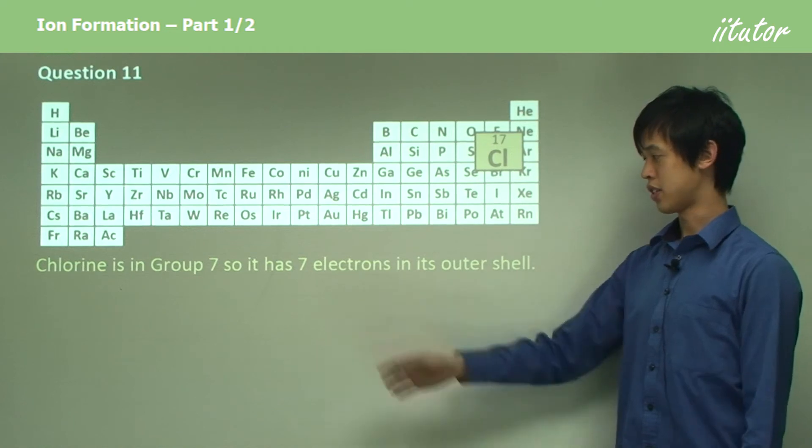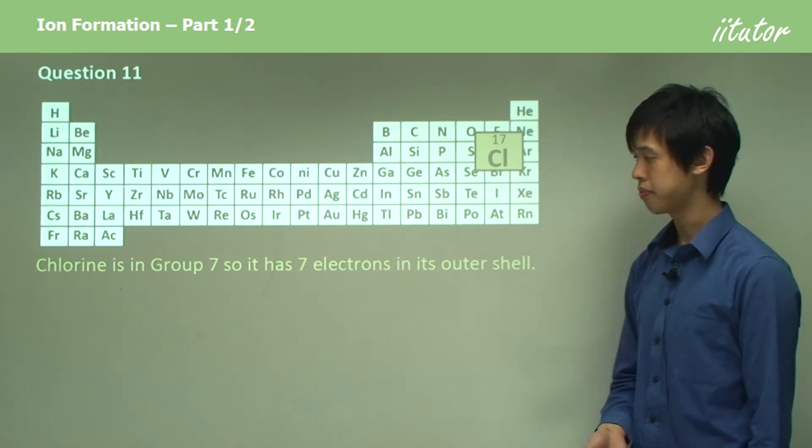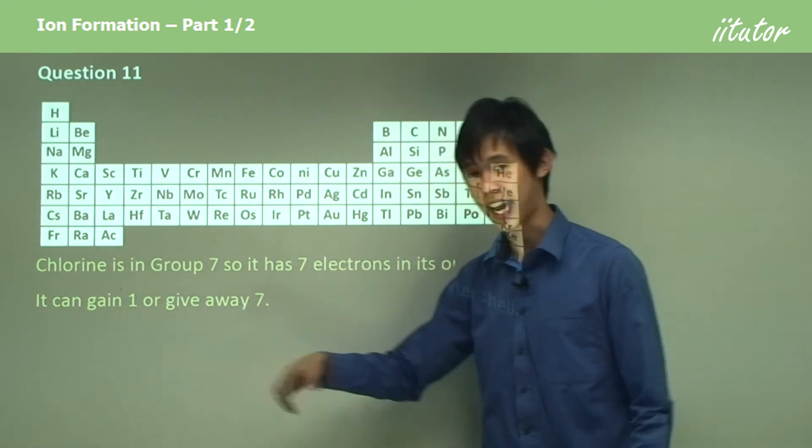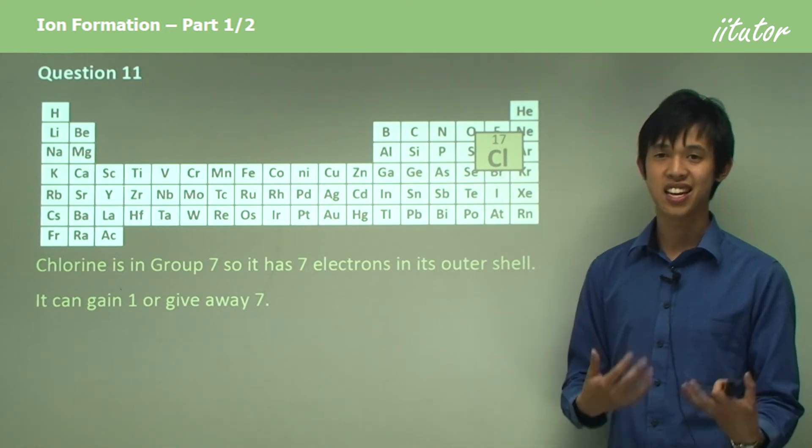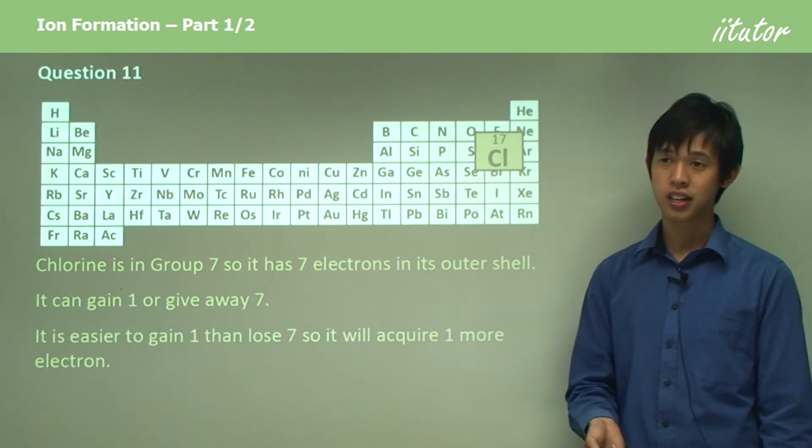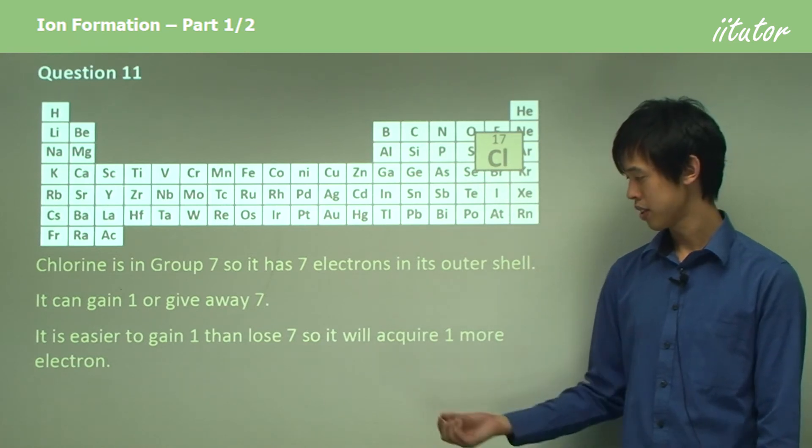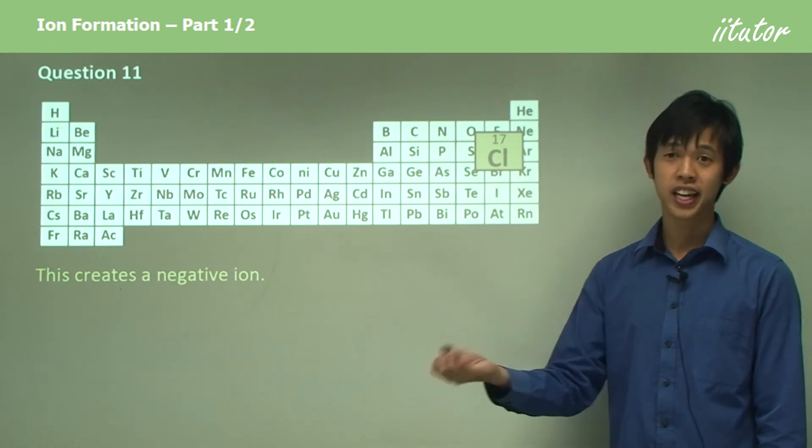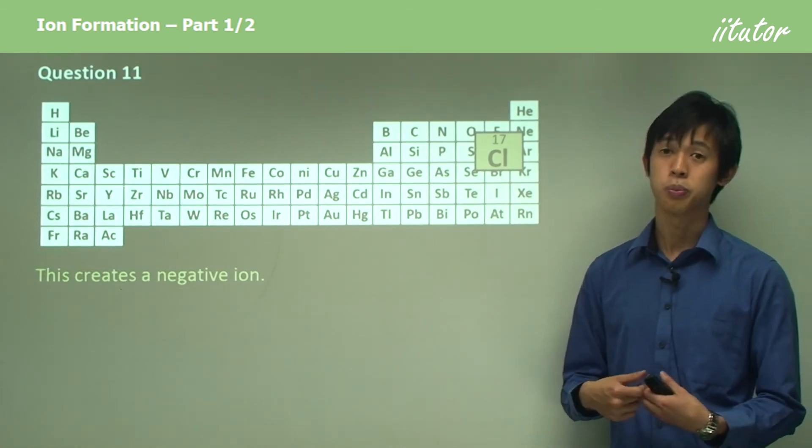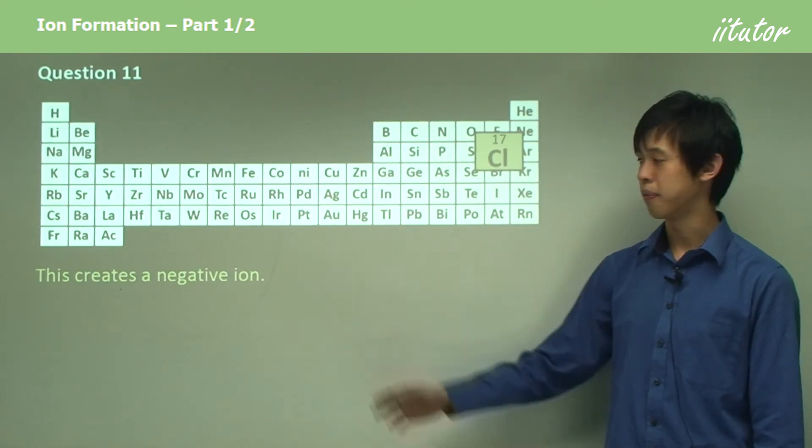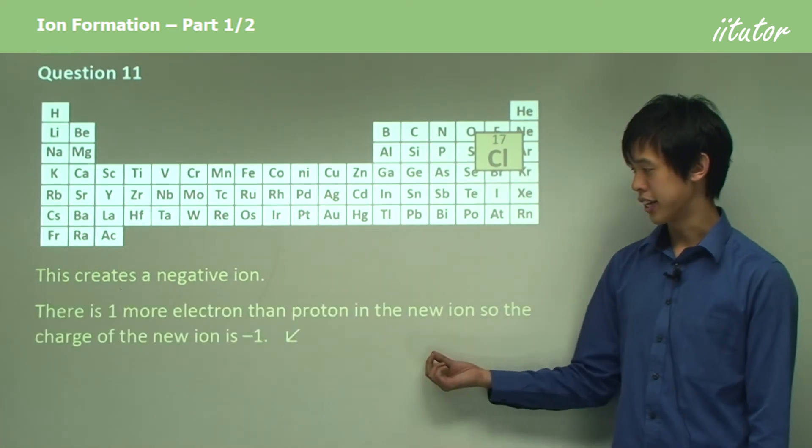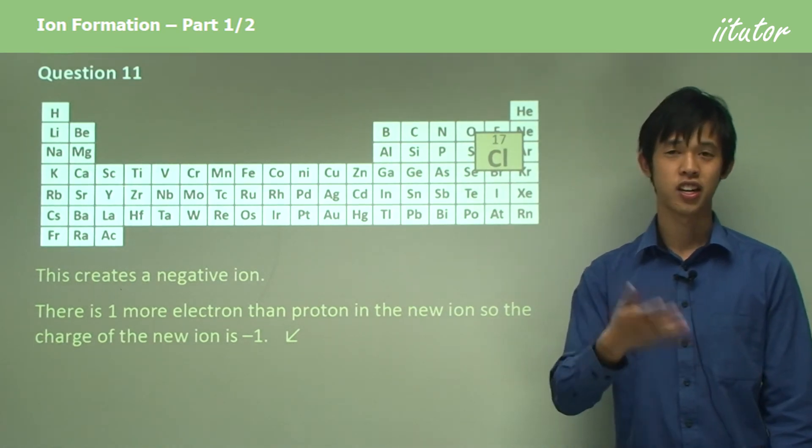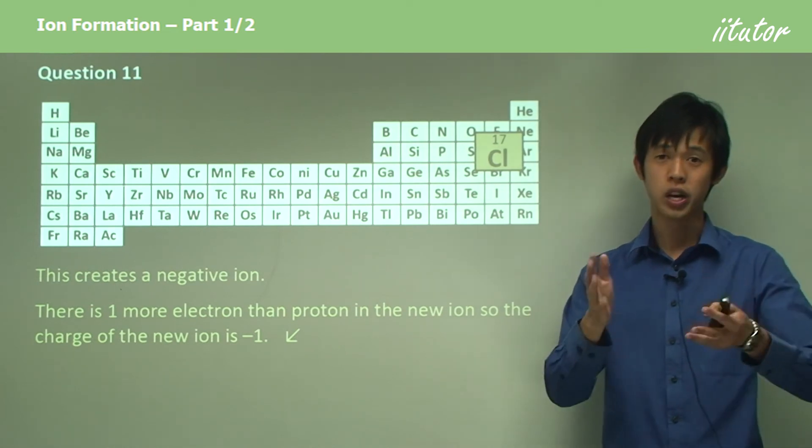So it has seven electrons in its outermost shell. So what are its options? It could gain one electron to make eight in its outer shell, or it could give away seven. Now if you think about it, it's easier to get one than lose seven, so it will acquire one more electron. Now obviously if it gets another electron, there's more electrons than protons, so it will be negatively charged. So it'll be a negative ion. Now since there's only one more electron than proton, the new ion will have a charge of negative one.